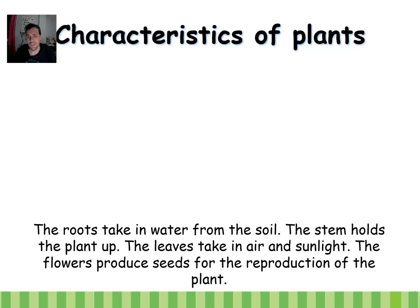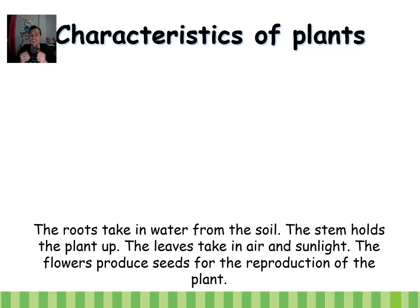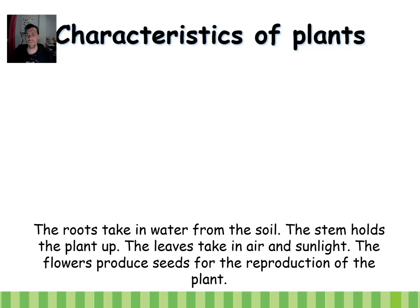The roots of the plant take water from the soil. When you water the plants, the roots take the water and the stem holds the plant up. The leaves take air and sunlight for feeding, and the flowers produce seeds for the reproduction of the plants.